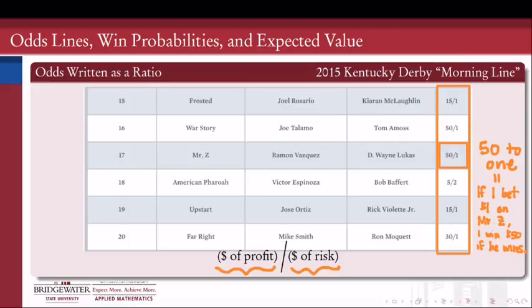How can you tell he's a long shot? Because your risk is so low but your reward is so high — it's a very high reward for a very small amount of risk. So if this horse were really likely to win and we set the odds at 50 to 1, there's a really good chance the gambling house would have to pay out a lot of money, because they only took in a little bit for bets on Mr. Z. The fact that the odds are so high indicates the bookie does not believe Mr. Z has a very good shot at winning, and so not many people will place winning bets on him. We would call that horse a long shot.